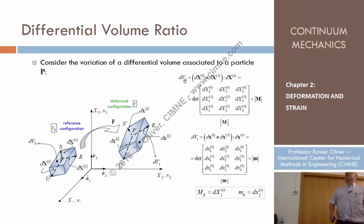In other words, the differential of volume at the reference configuration is just obtained by the determinant of this matrix, whose component IJ, the component IJ of this matrix is the component J of vector I, I standing from one to three. It's just how this matrix is constructed. So far, mathematics.